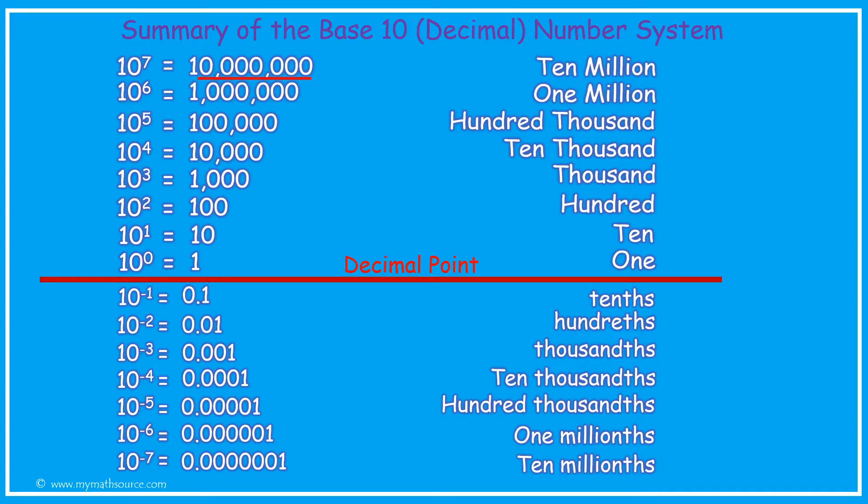The number 10 million has 7 zeros, and when we write it in base 10 format, we say 10 to the power of 7. The number 10 millionths is written with 7 zeros as well, and we can write that as 10 to the power of negative 7.